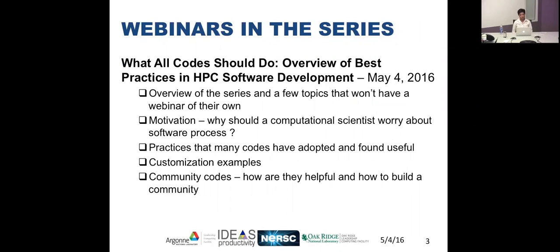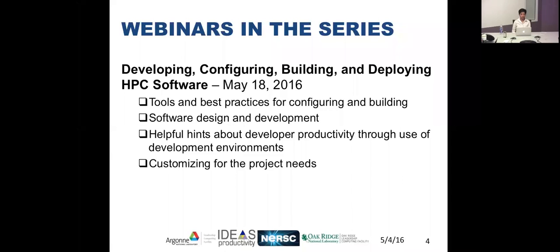Today's webinar is an overview and introduction. We want to provide motivation for why a computational scientist should worry about software process, the practices many codes have adopted and found useful, examples of customizations, and a discussion of community codes — why they are helpful and how to go about building a community. The next webinar in the series, two weeks from today, will be given by Barry Smith on developing, configuring, building, and deploying HPC software — the tools and best practices for configuration and building of software.